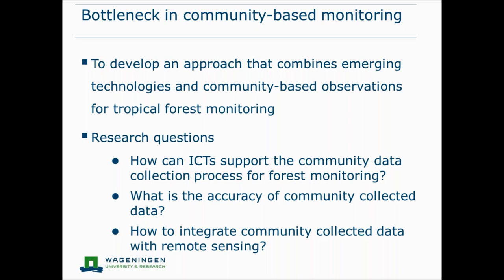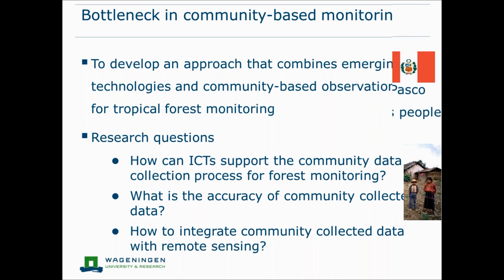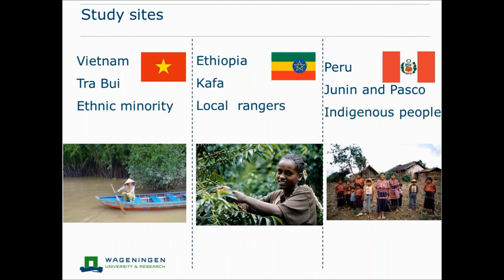But there is still the bottleneck of how to develop an approach that combines this technology for community-based monitoring. There are three key research questions: first, how can ICT support the community data collection process; second, what is the accuracy of community-collected data and how can we assess that; and third, how to integrate this data with remote sensing or other existing data sources.